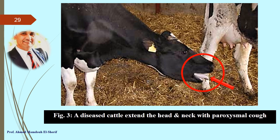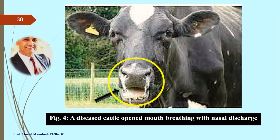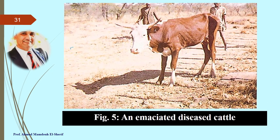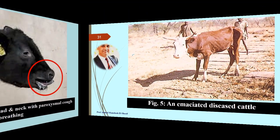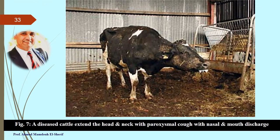A picture of a diseased cattle extending the head and neck suffering from paroxysmal cough; the red arrows denote the open mouth with extended tongue. Another picture shows open-mouth breathing with nasal discharge and saliva. Emaciated diseased cattle due to verminous bronchitis. A diseased calf extending the head and neck with paroxysmal cough, mouth breathing, outgoing tongue, and nasal and mouth discharges.